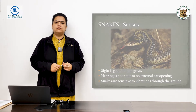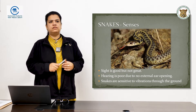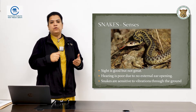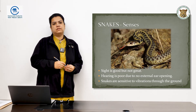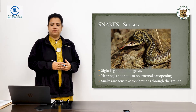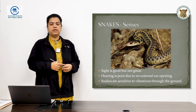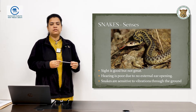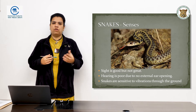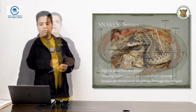Let's look at the senses that snakes use. We have five senses that we use to function effectively in our daily lives. With snakes, starting with sight — their sight is not very good. Their hearing is poor because they have no external ears. But they have a very good sense of picking up vibrations from the ground using their lower jaw.